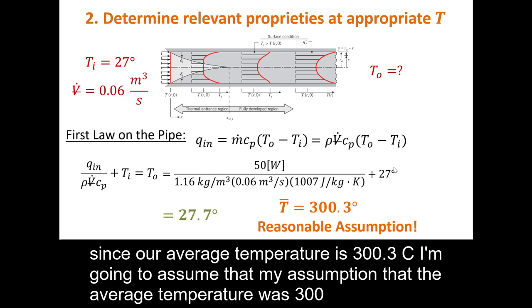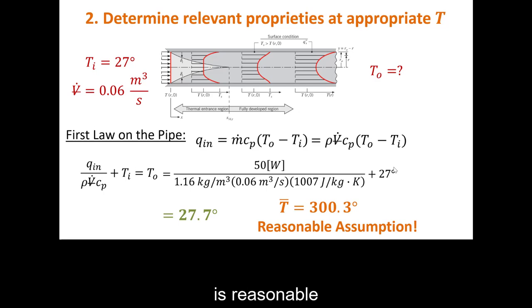Since our average temperature is 30.3, I'm going to assume that my assumption that the average temperature was 300 is reasonable.